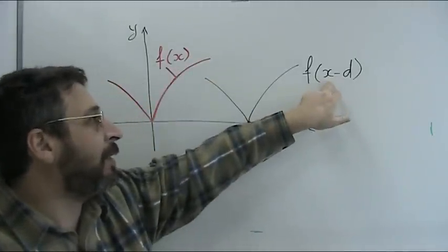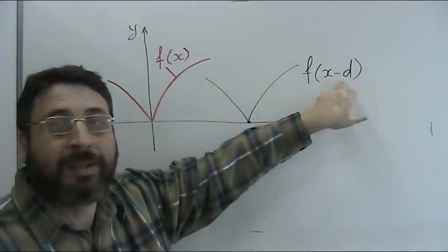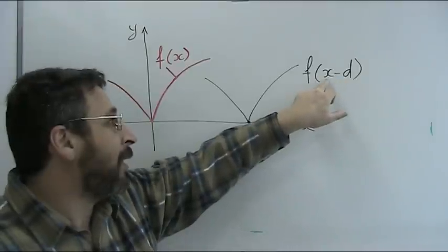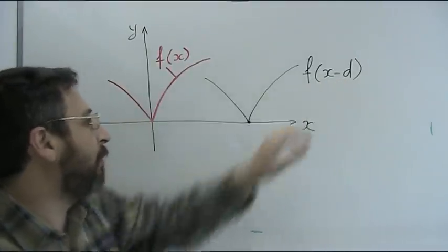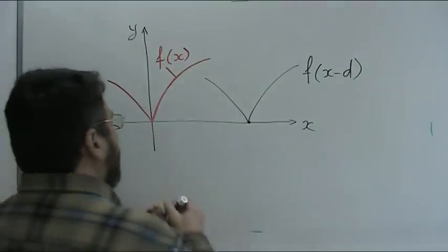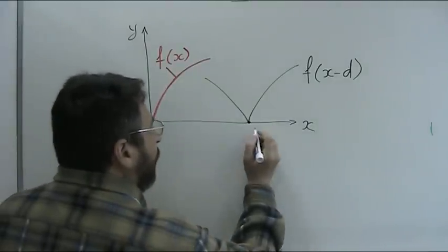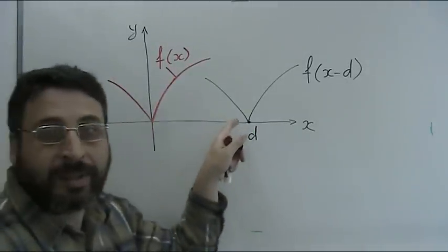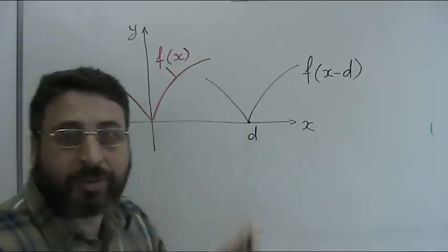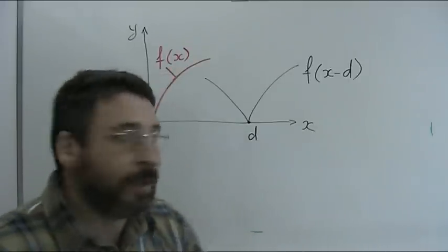What will be here if x equals d? The argument of the function will be 0 and the function itself will be 0. So at least we see that the bottom point is shifted by d. But we can do similar checks for other points as well.